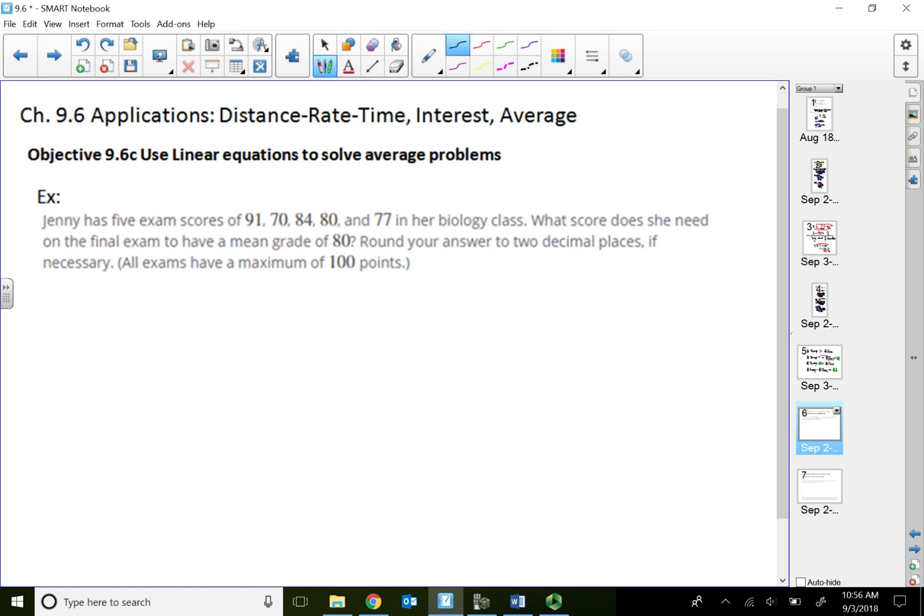So ideally, we can say 91 plus 70 plus 84 plus 80 plus 77, these are the first five, plus her final exam, we don't know, which is x, divided by the total of six exams. So add them all up, divided by six, equal to an average or mean grade of 80.